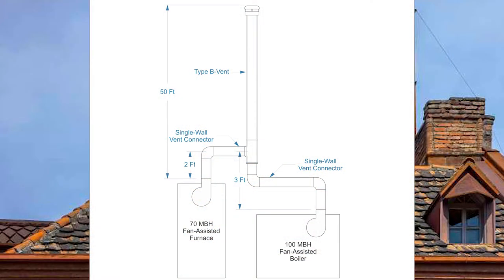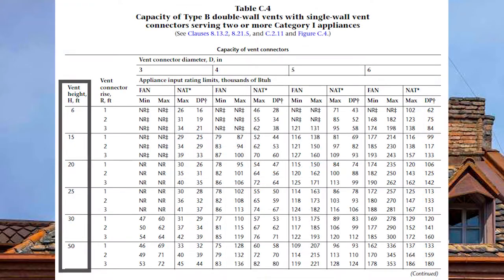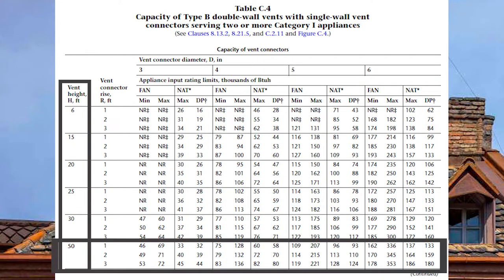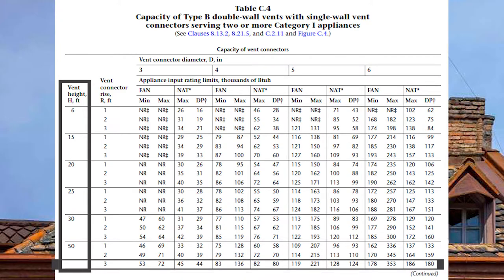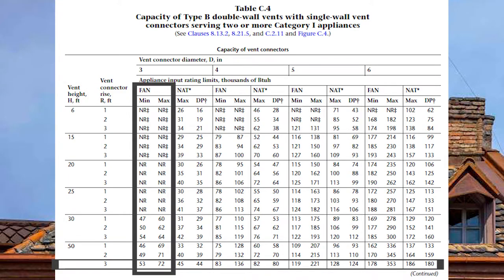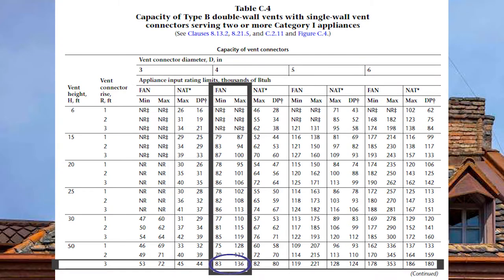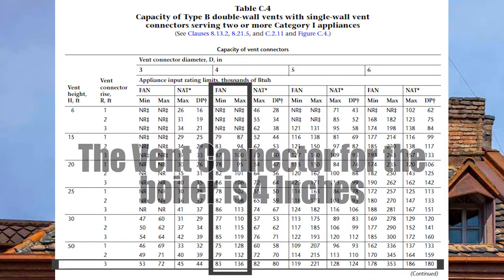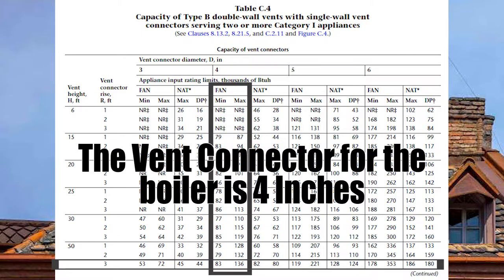Now let's take care of the boiler. Coming down to a vent height of 50 feet and across on a vent connector rise of three feet. The three-inch vent connector is only good between 53,000 and 72,000 BTUs. But the four-inch is good between 83,000 and 136,000 BTUs — perfect for my boiler. So I will have a four-inch single wall vent connector serving that boiler.